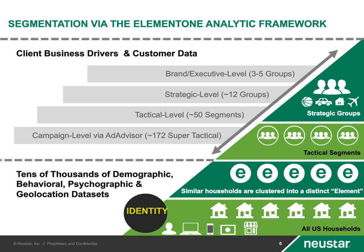Once you get to that tactical level, you can start clustering those segments up further depending on your objectives. A lot of clients don't want to put together 50 different pieces of creative, although some might want that granular level. Many clients say they prefer something easier to create and manage. So we'll take something from a tactical level and roll it up into a strategic level based off of high-level metrics — typically something like affinity and lifetime value or a profitability metric. With something built around 10 to 12 groups, you can create different messaging around each one and do some testing.